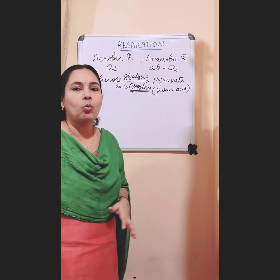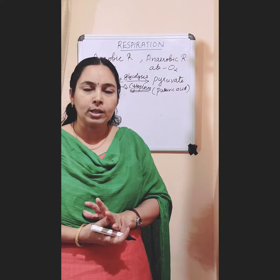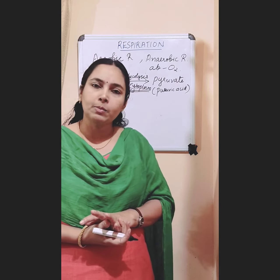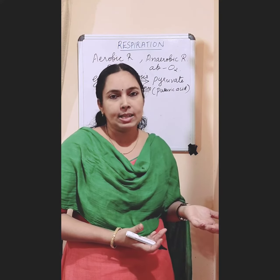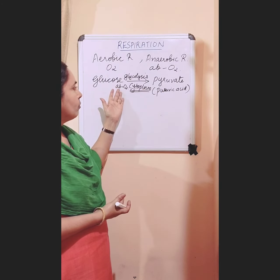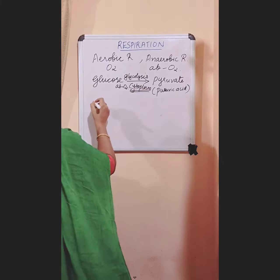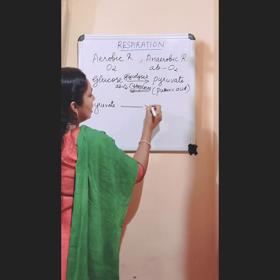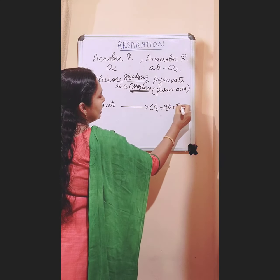Now we can look at what is the second step. The first step is the same for both aerobic and anaerobic respiration, but the second step is different. In aerobic respiration, the first step is glucose to pyruvate, taking place in the absence of oxygen in the cytoplasm. Then the second step is that this pyruvate breaks down into carbon dioxide, water, and energy.